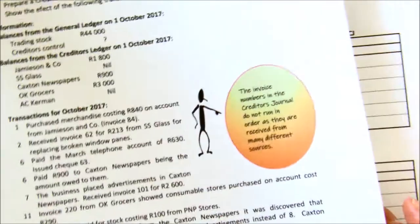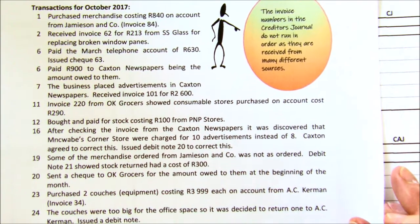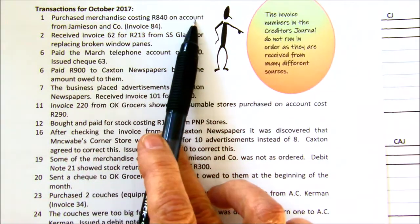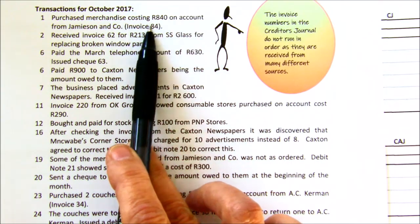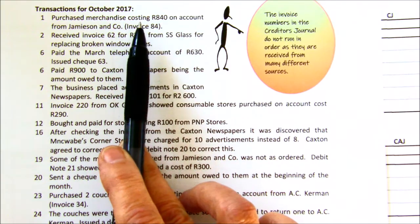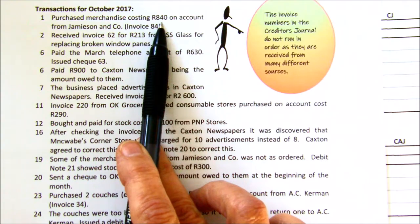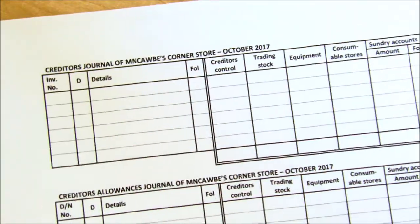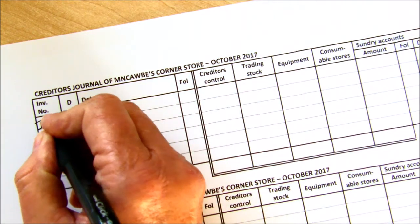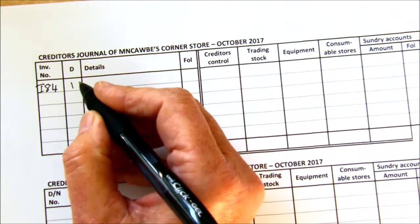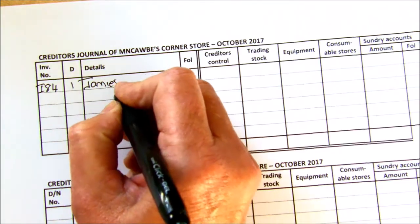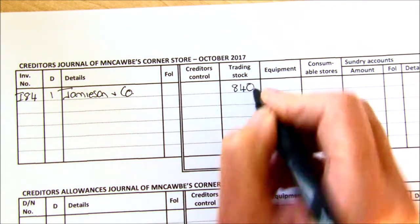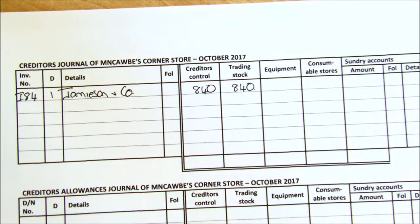For the first entry, we purchase merchandise costing 840 on account — the words 'on account' and the invoice tell you it's going into the creditors journal. Invoice number 84, dated the first, from Jameson and Co. Merchandise is another name for trading stock, so you're buying trading stock and because it's on credit you owe your creditor 840.